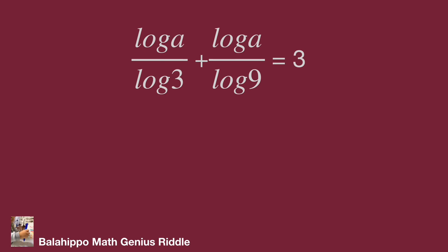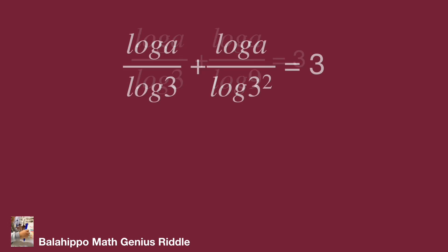Change the 9 to 3 squared in the second fraction. Another logarithm rule is log x power y equal to y multiplied log x. Adapt the formula to the second fraction. The equation is log A over log 3 plus log A over 2 times log 3 equal to 3.